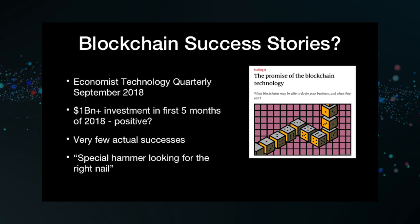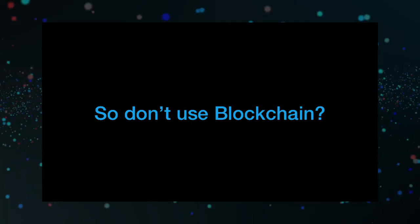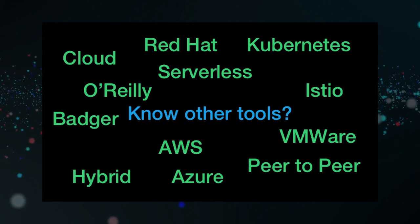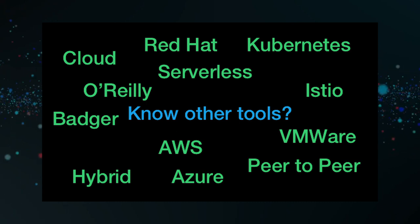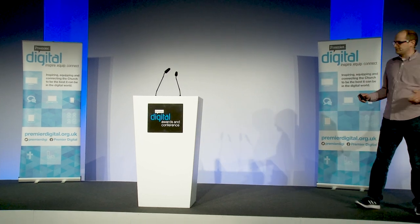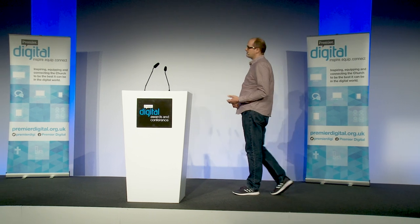I'm being very negative because I want you to be very careful with this technology. However, The Economist Technology Quarterly from September 2018 has good articles on it. There were over a billion dollars of investments in the first five months of 2018, but very few actual successes. The big quote is: 'It's a special hammer looking for the right nail.' It's interesting, but not really useful for anything apart from cryptocurrencies at the moment.